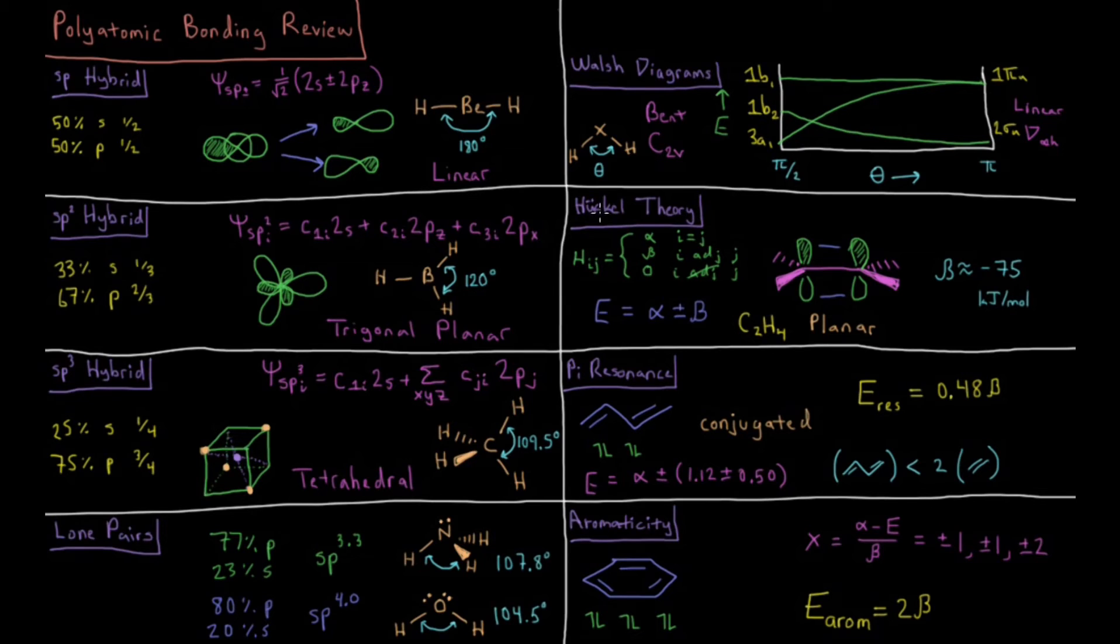Moving on to Huckel theory. Huckel theory is essentially a linear variational method where we make approximations for what the Hamiltonian matrix elements are. This is a good approximation for how planar hydrocarbons work. We start with the simplest example of ethylene, C2H4 or ethene, and the pz orbitals of our pi system don't overlap with any other orbitals.